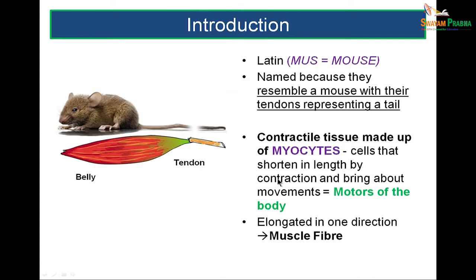What is Muscle? In Latin, 'Mus' means a mouse. Muscles resemble a mouse with the belly being the body and the tail of the mouse being the tendon. It's a contractile tissue made up of cells called myocytes, and these cells shorten by contraction and are lengthened in one direction, wherein they are called muscle fibers.